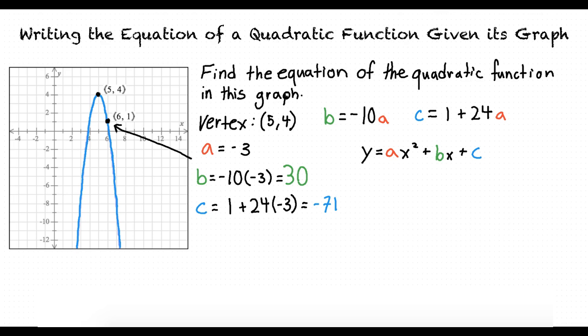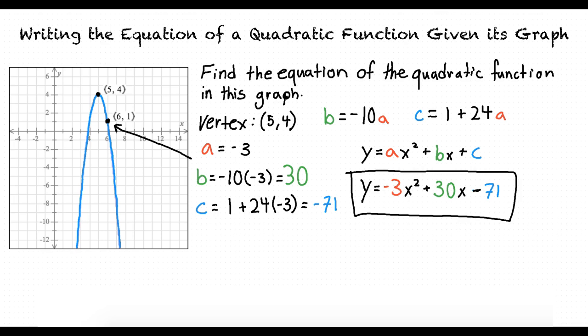Now that we have numerical values for a, b, and c, we can substitute these new values into the original quadratic form. Doing so, we find that the equation for our quadratic function is y equals negative 3x squared plus 30x minus 71. To summarize: to find the equation of a quadratic function when given its graph, we find a, b, and c values to substitute into y equals ax squared plus bx plus c. We find these by first finding the numerical value of a, then using that to solve for b and c, and finally substituting them into the quadratic function form.